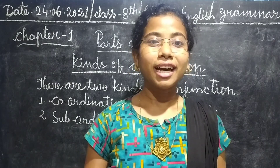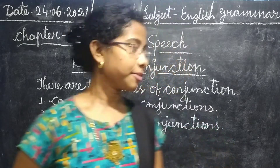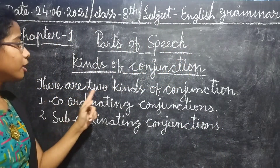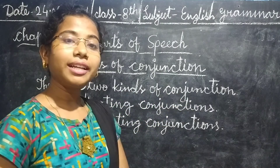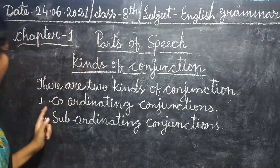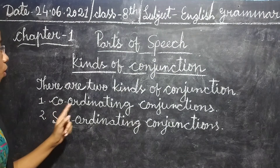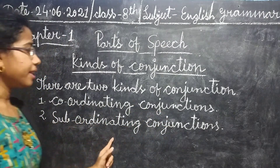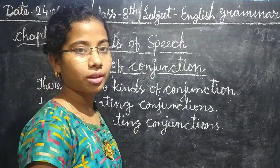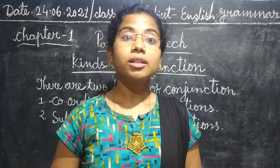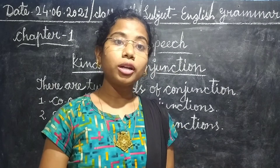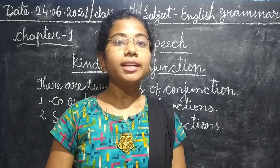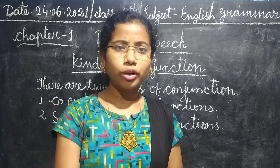Now see the kinds of conjunction. There are two kinds of conjunction in English grammar. Number one, co-ordinating conjunctions. Number two, sub-ordinating conjunctions.